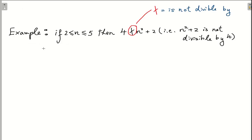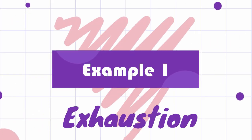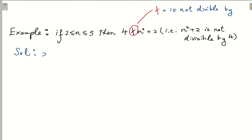Let's see an example. We want to prove that if n is greater than or equal to 2 and less than or equal to 5, then n² + 2 is not divisible by 4. This symbol here means 'not divisible by.' So we apply proof by exhaustion. If n is between 2 and 5, we have the following cases. Case 1: n = 2. Substituting into n² + 2, we get 2² + 2 = 6.